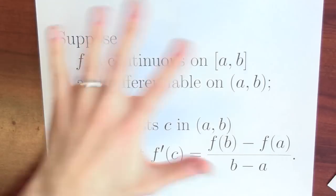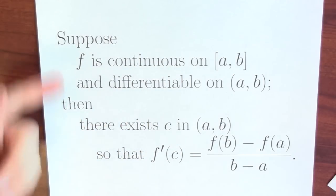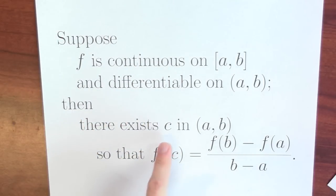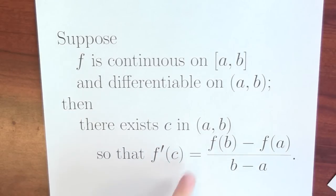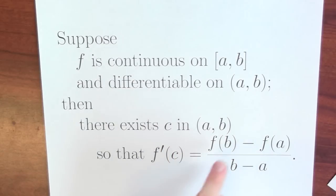Let's go back to the official statement of the mean value theorem. A nice enough function has some point in the middle so that the derivative — your instantaneous velocity — is equal to the difference quotient, which is calculating your average velocity.